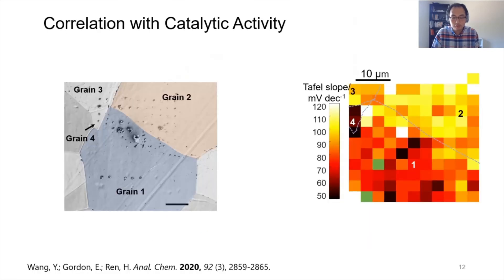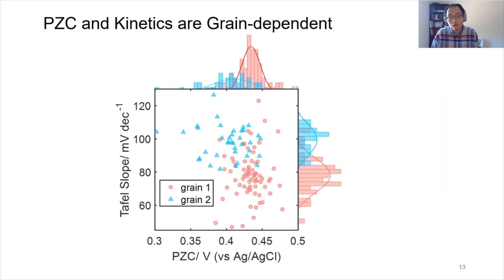We convert those voltammograms locally and extract the Tafel slope. A map of the Tafel slope at different grains clearly shows that different grains have different activities for the hydrogen evolution reaction. Correlating this to the PZC values — with Tafel slope on the y-axis and PZC values on the x-axis — we see that the two major grains have two distributions of both Tafel slope and PZC. There is a negative correlation between the Tafel slope and the PZC values. Each individual data point represents one local measurement defined by the SECCM.